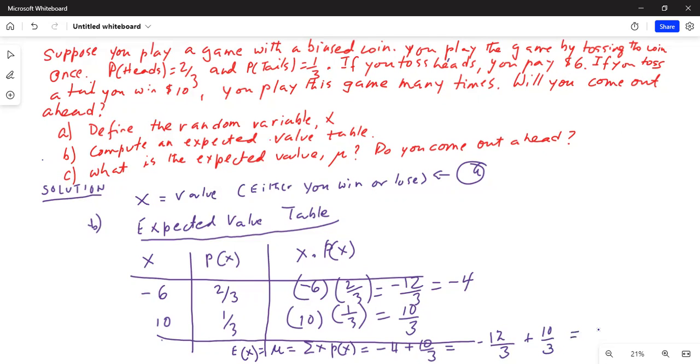And that is equal to 10 minus 12, which is 2, but you keep the negative sign of the larger number 12. So minus 2 over 3 is equal to minus 0.67. That is your expected value or mean.